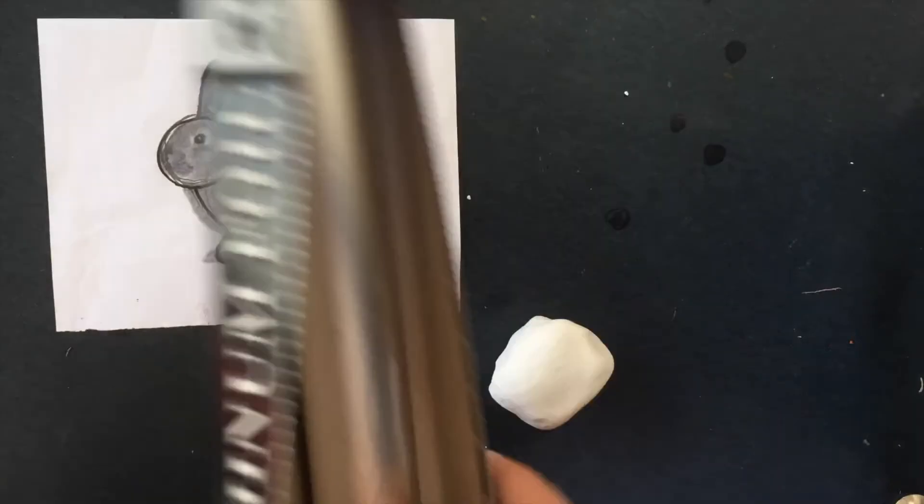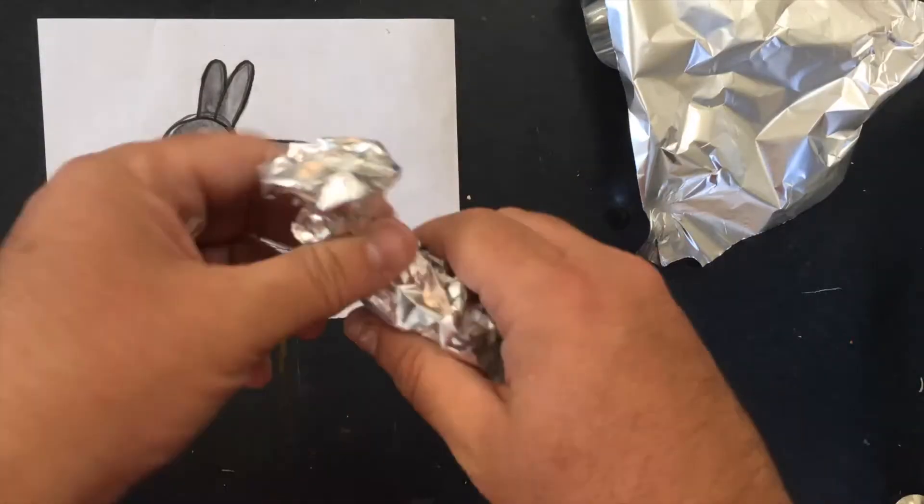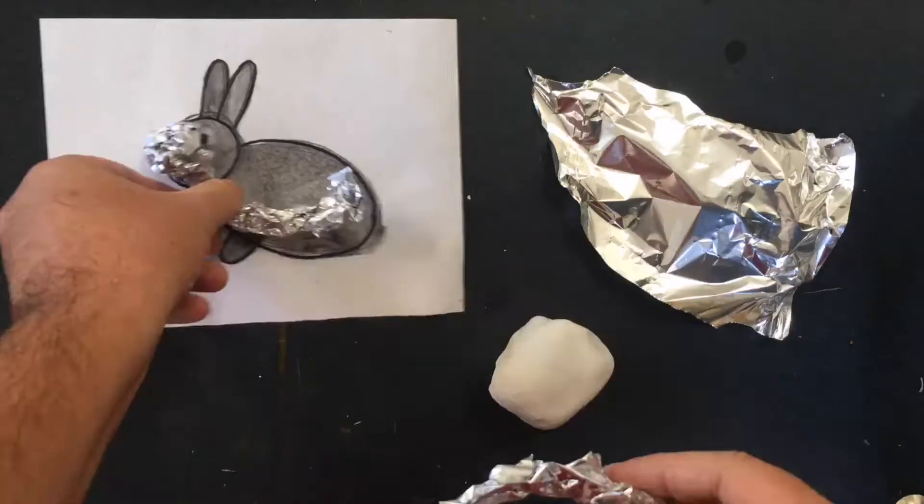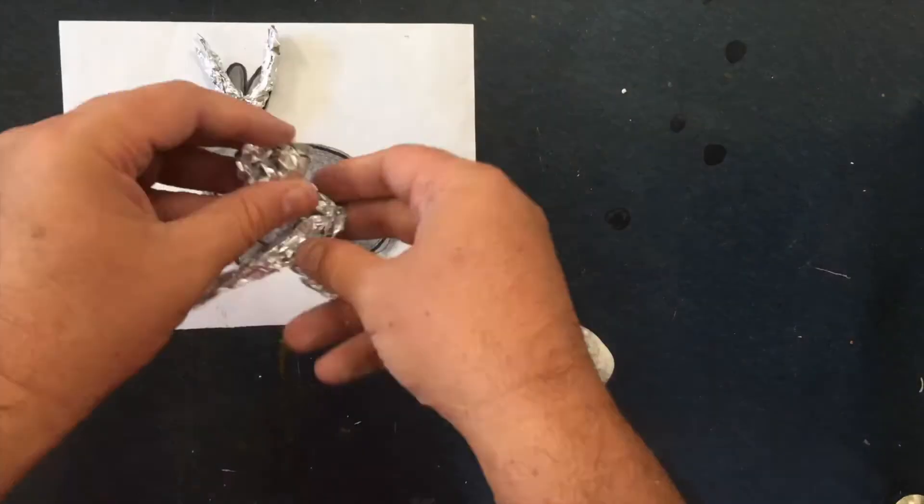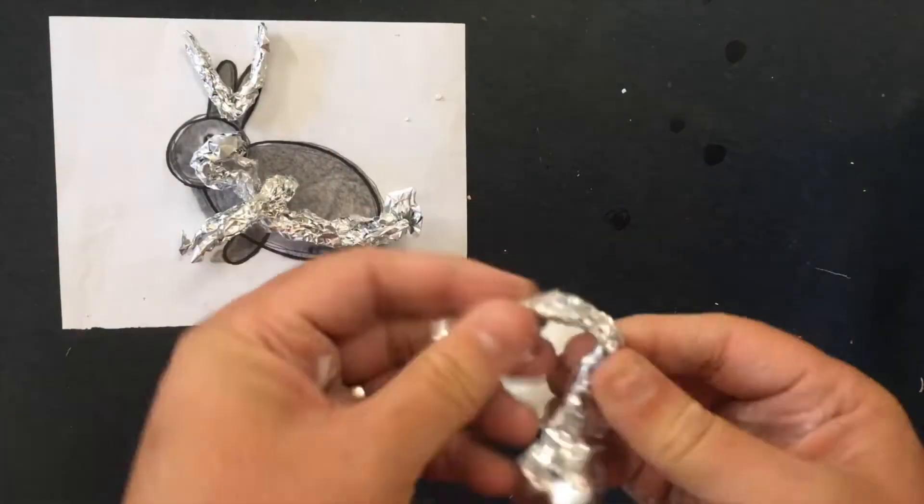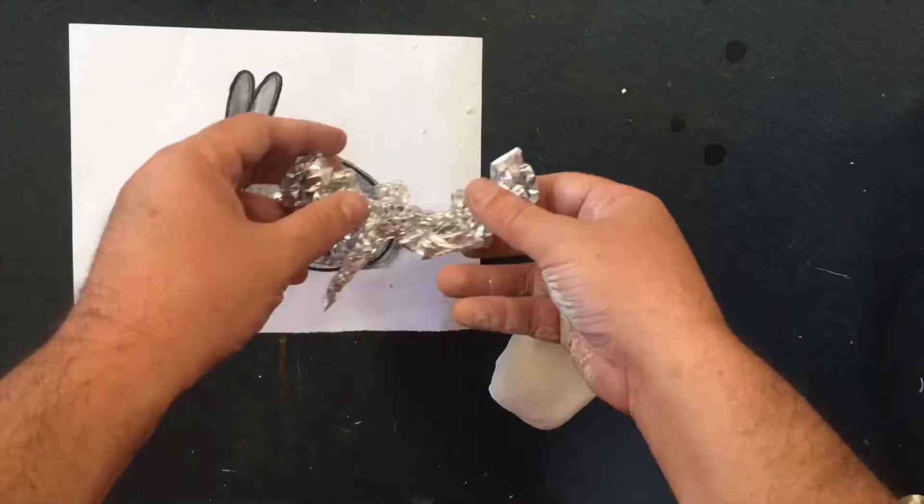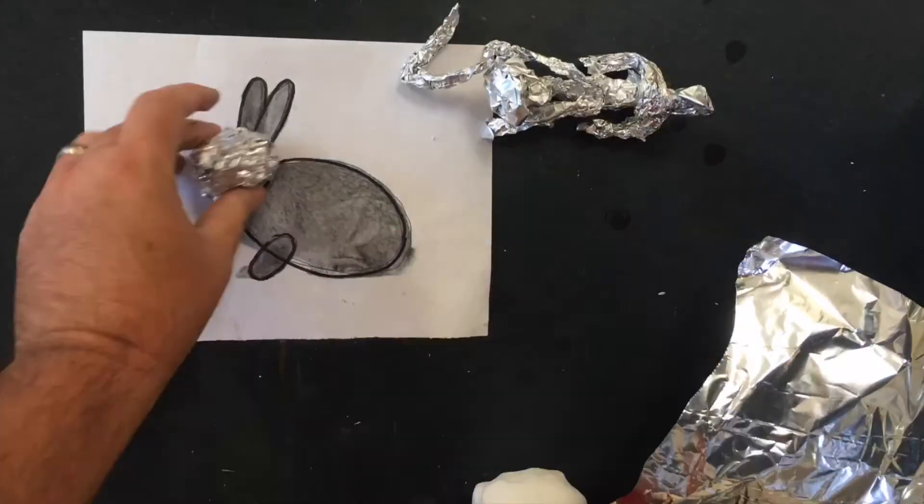An even better way to make sure your sculpture doesn't break is with an armature. You use wire or tin foil to make what's basically a skeleton for your sculpture. Some artists build actual skeletons for their sculptures, but all we need to do is make the basic forms.